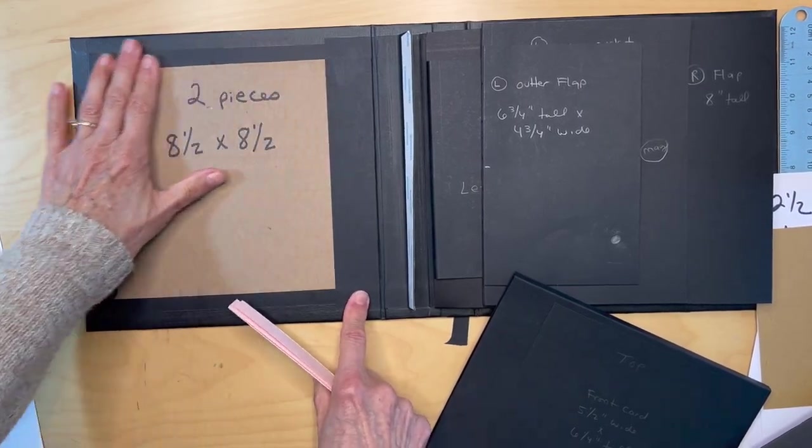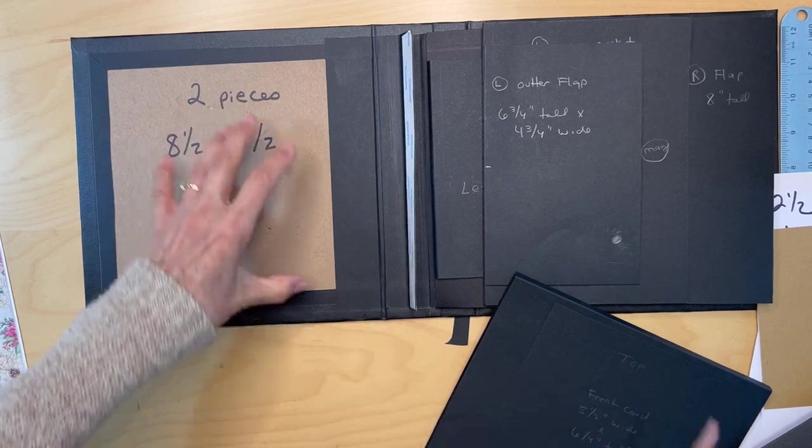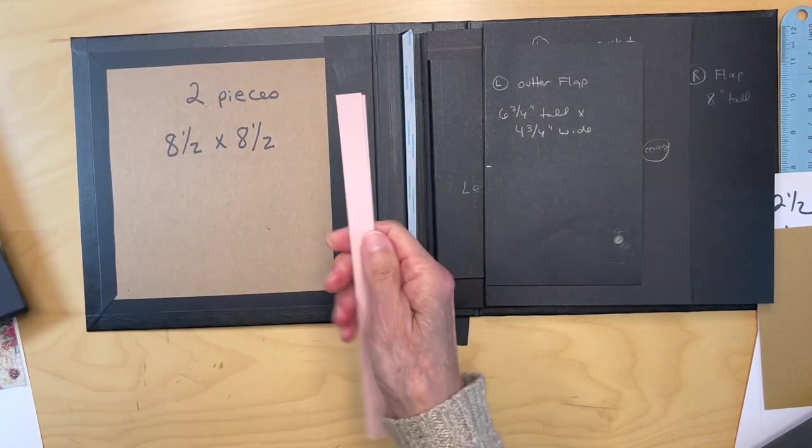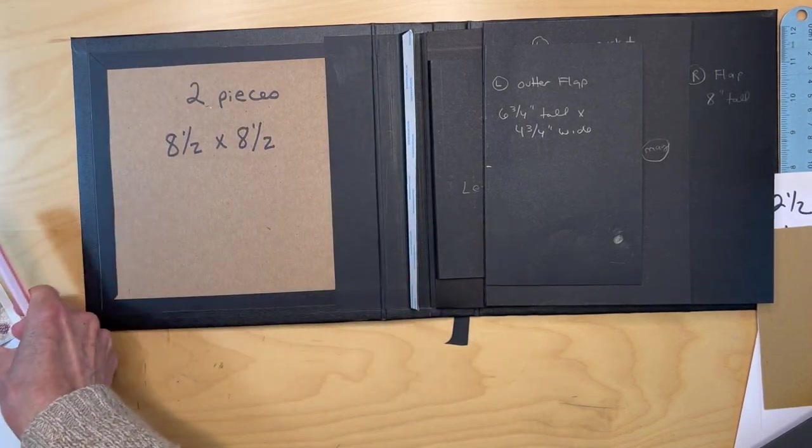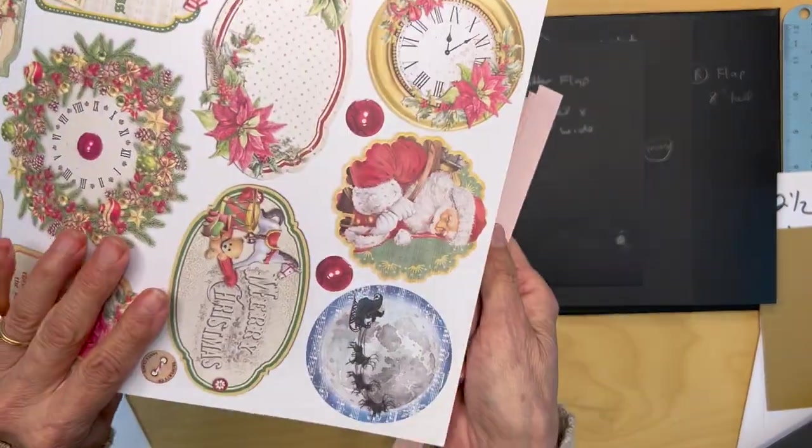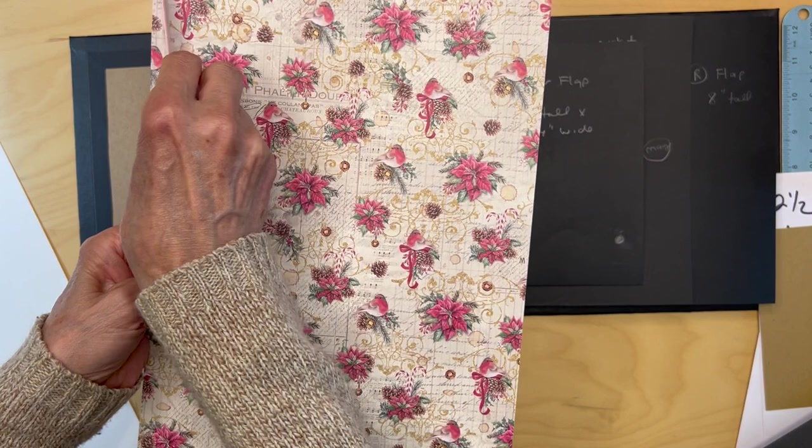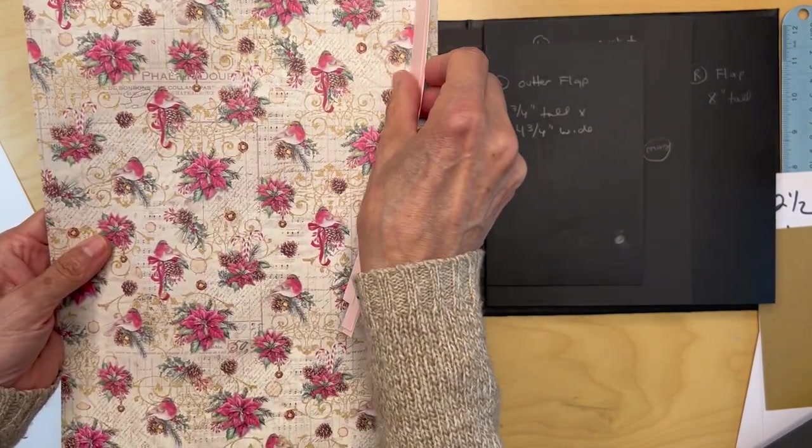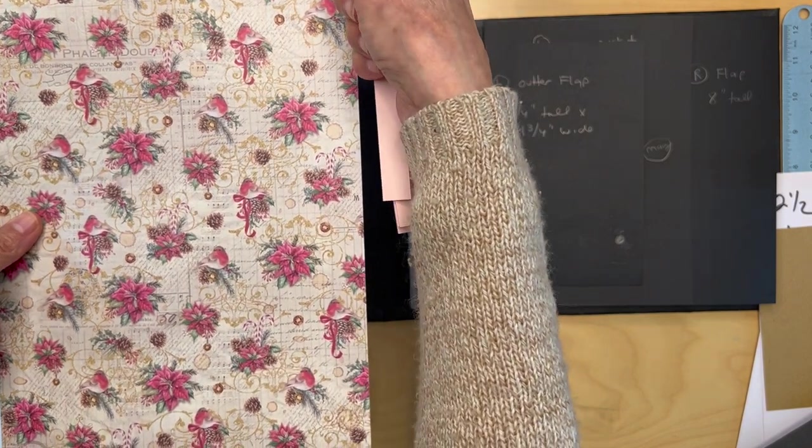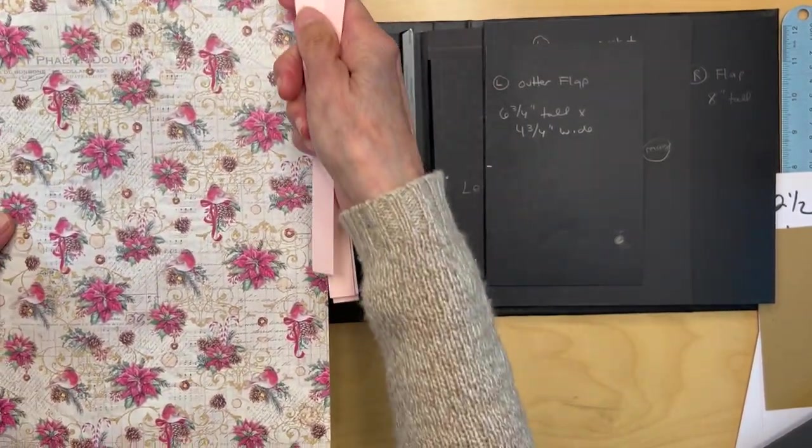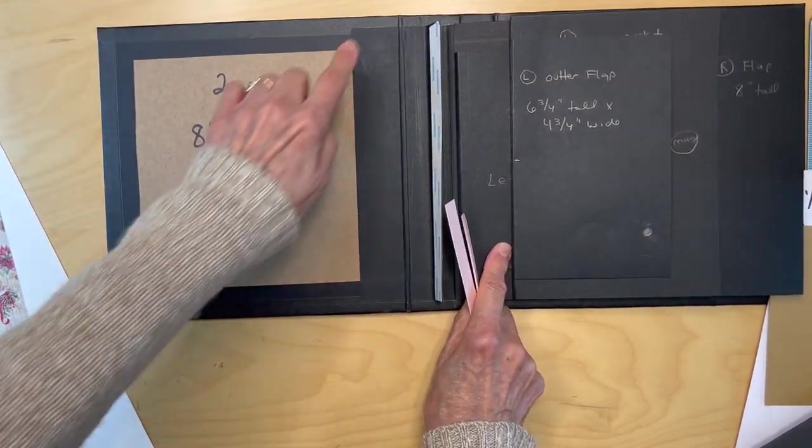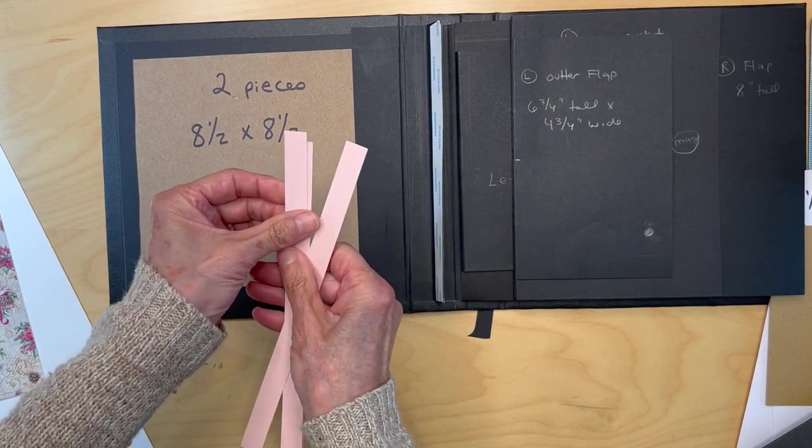Next we're going to work on our inside front cover. Get the piece that we've created. We have not adhered it down yet. First thing you're going to do is get the leftover bits from this paper. You already cut out four inches. So you should have four inches left. So you're going to make half inch strips.